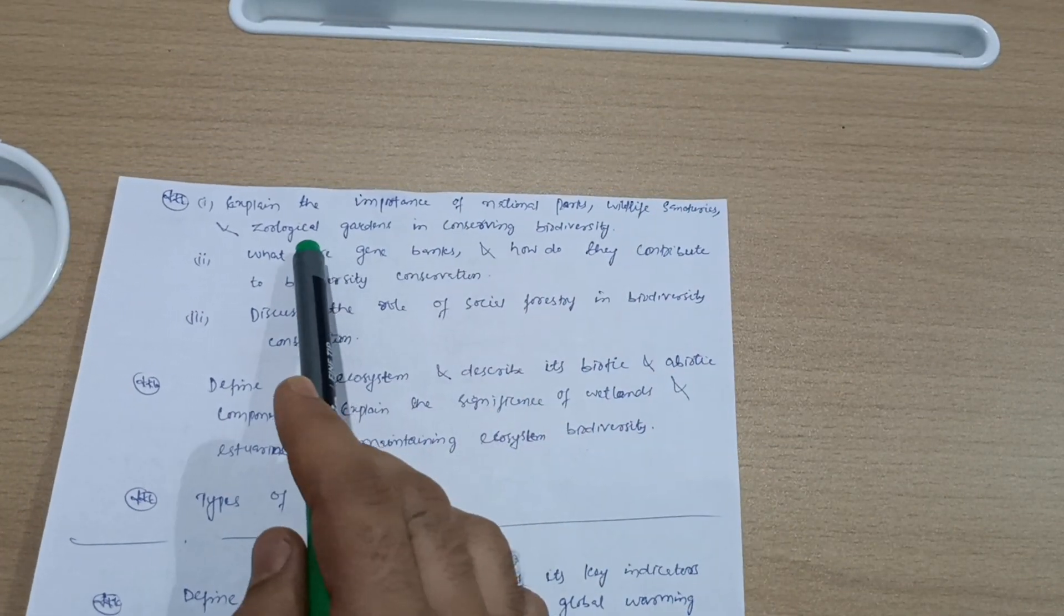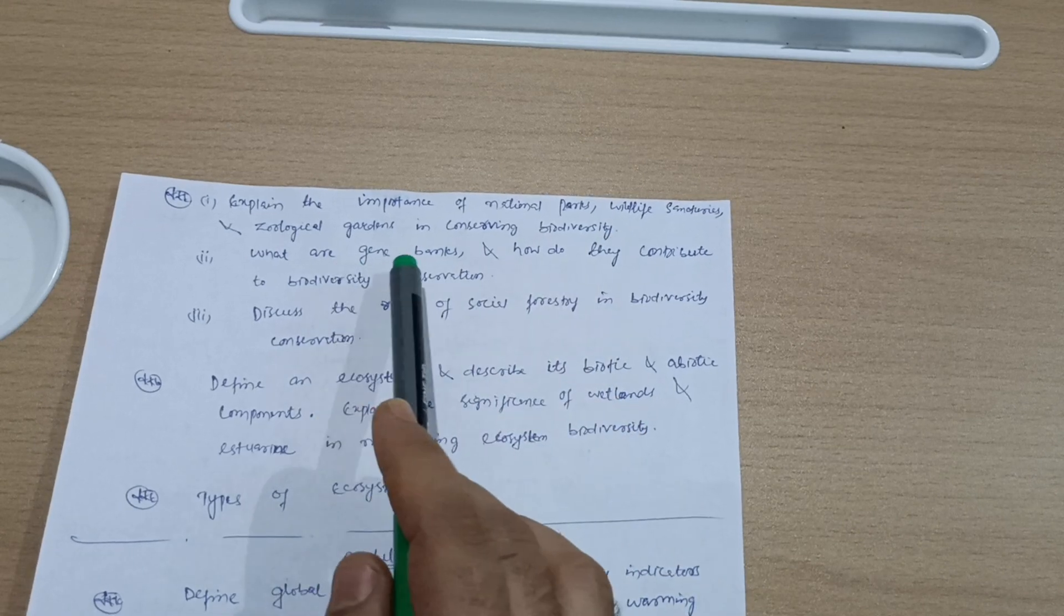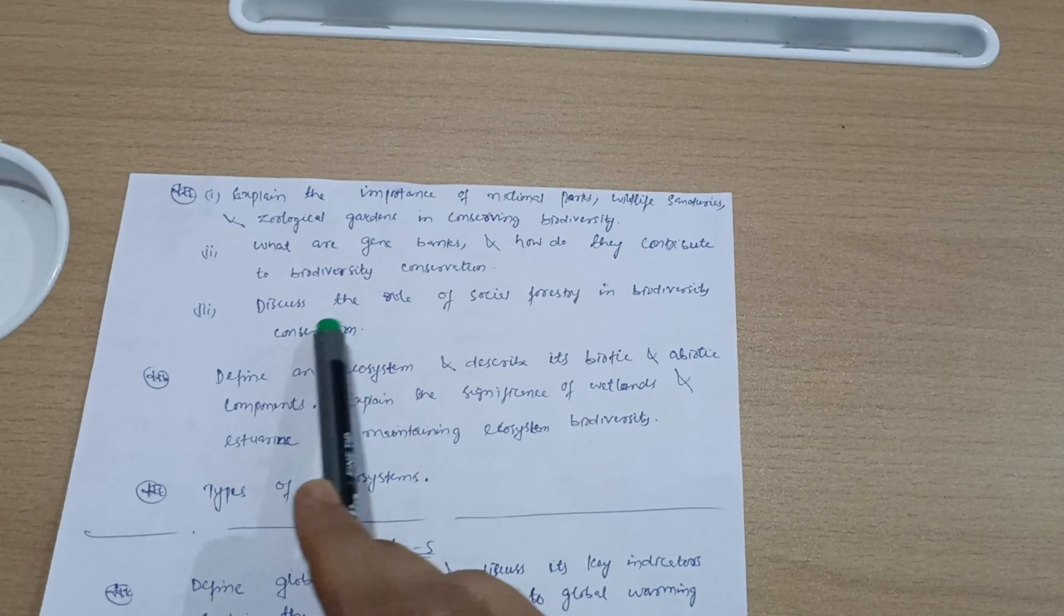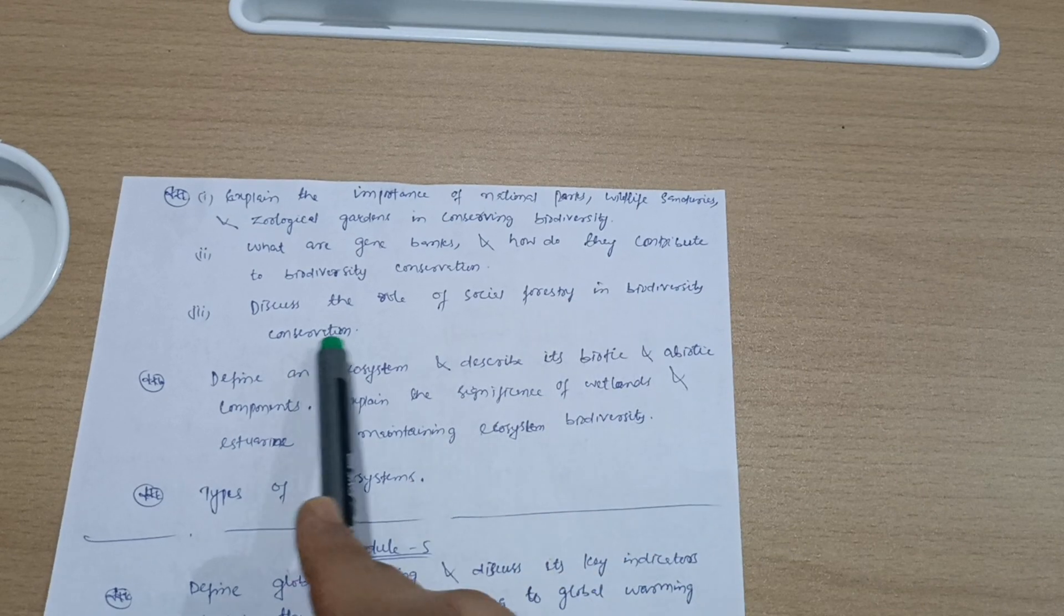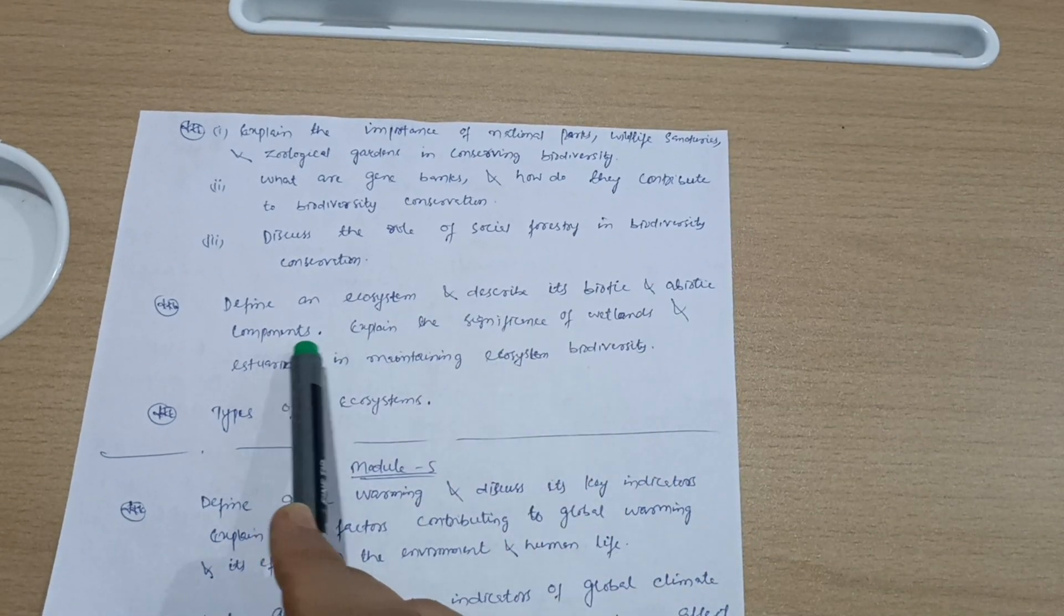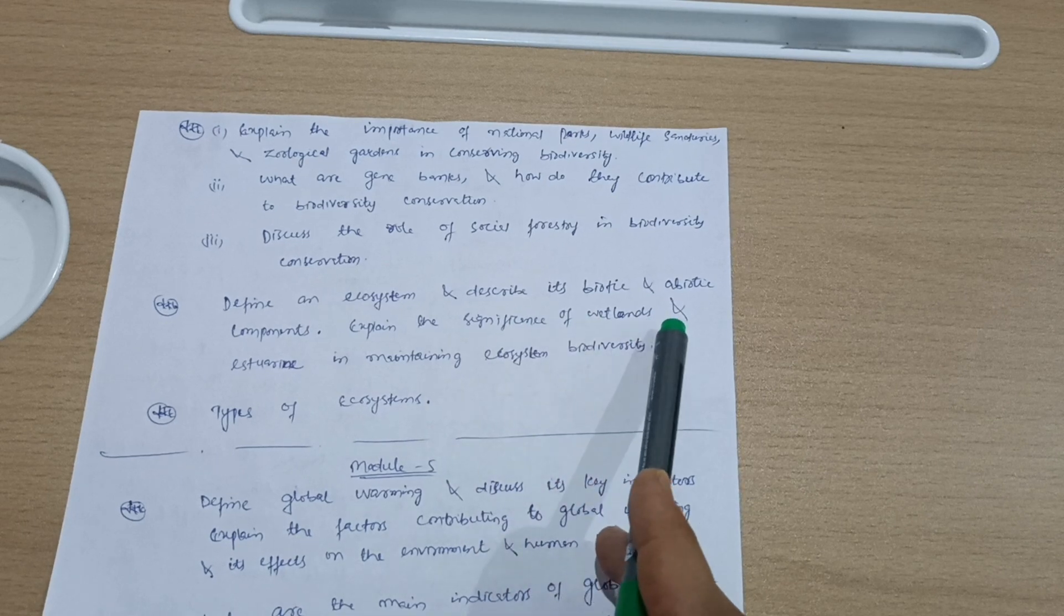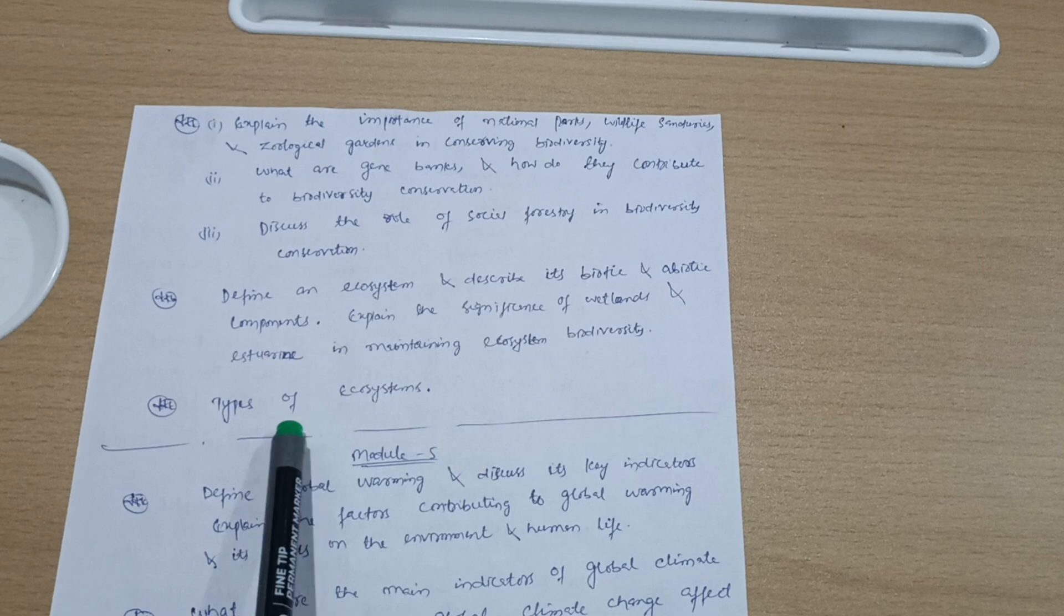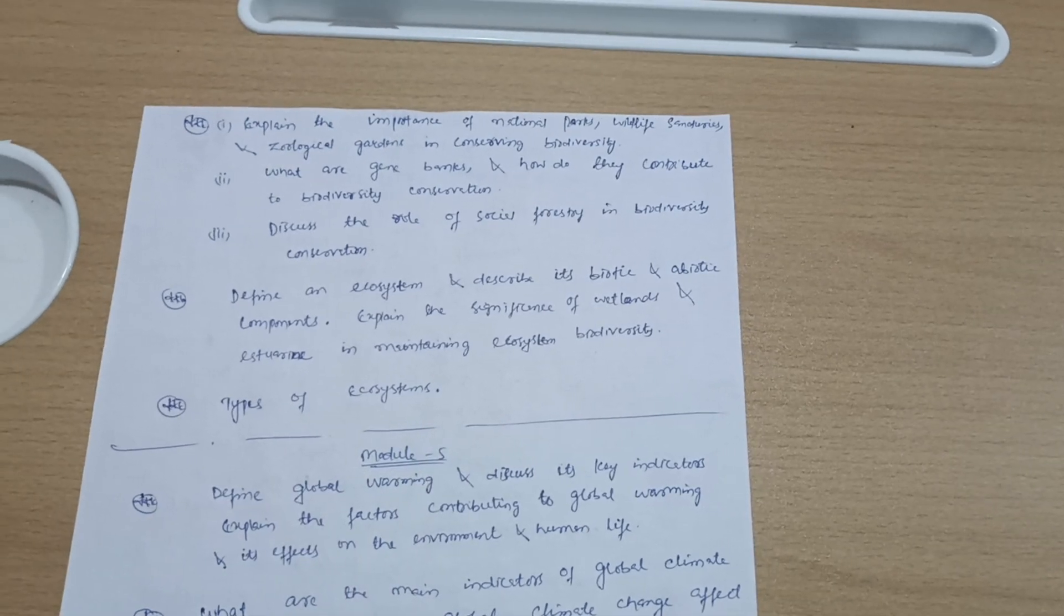Explain the importance of national parks, wildlife sanctuaries, and zoological gardens in conserving biodiversity. What are gene banks and how do they contribute to biodiversity conservation? Discuss the role of social forestry in biodiversity conservation. Define an ecosystem and describe its biotic and abiotic components. Explain the significance of wetlands and streams in maintaining ecosystem biodiversity, and also go through types of ecosystems.